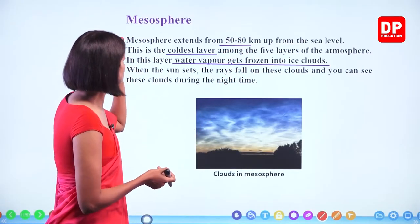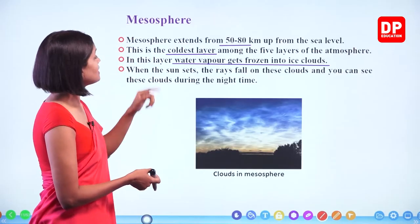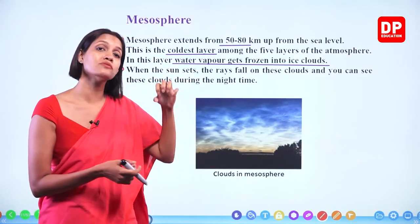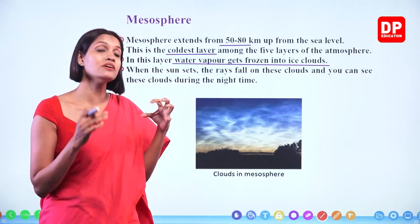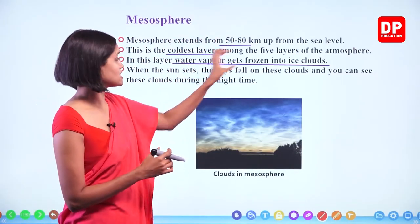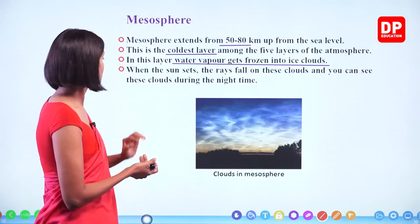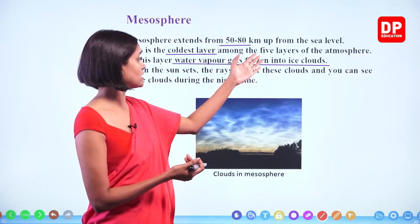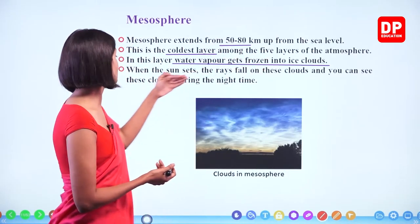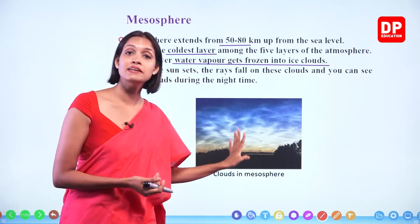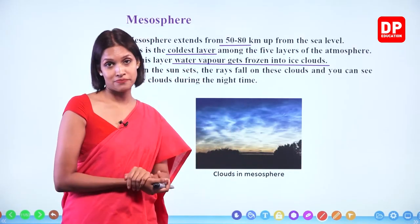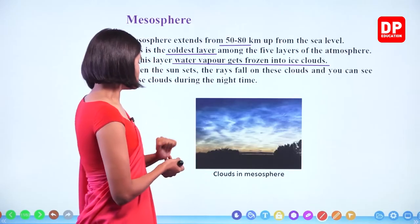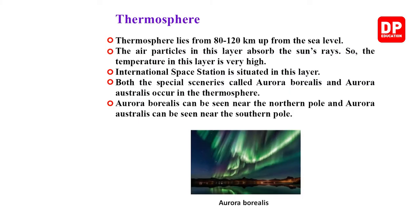When the sun sets, its rays fall on these ice clouds and you can see them during the night time with different colors — these are the ice clouds of the mesosphere. So the mesosphere is the coldest layer, extending from 50 to 80 km, and its water vapor freezes into ice clouds that can be seen at night.